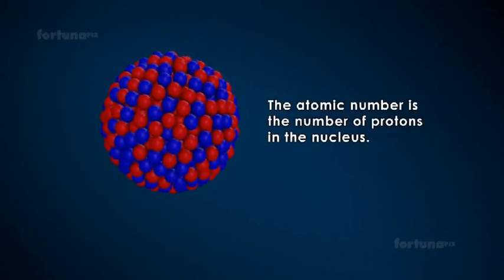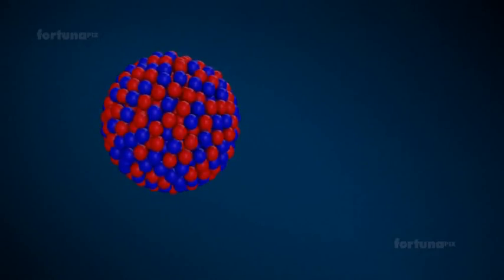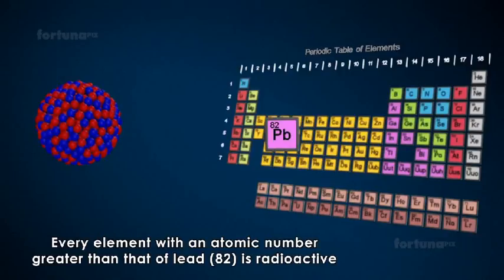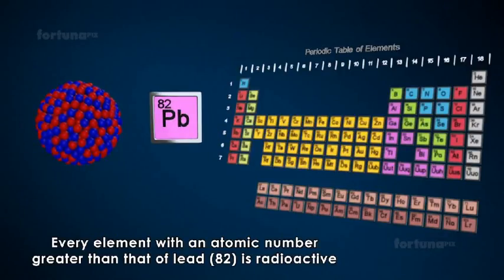The atomic number is the number of protons in the nucleus. There is a correlation between radioactivity and the atomic number of an element. Every element with an atomic number greater than that of lead, 82, is radioactive.